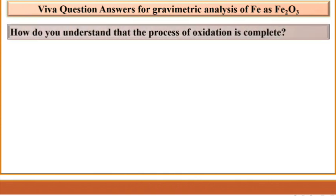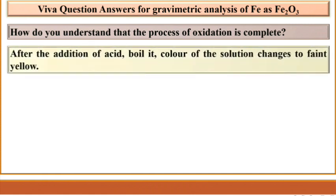How do you understand that the process of oxidation is complete? After the addition of concentrated HNO₃, boil the solution — the color of the solution changes to faint yellow.